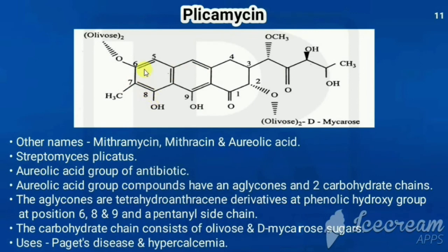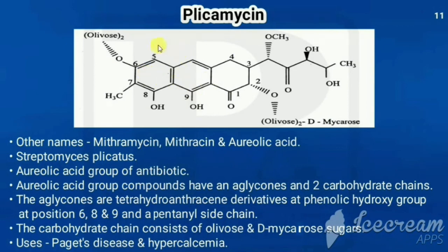Plicamycin has three phenolic hydroxy groups at the sixth, eighth, and ninth positions. The second portion is not a phenolic hydroxy group because that ring is not a phenyl ring. The carbohydrates present are olivose and D-mycarose.